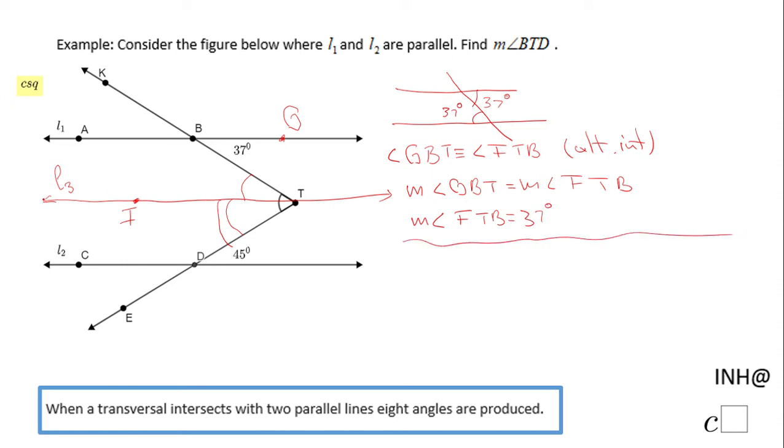Similarly, we're gonna look to L sub 3 and L sub 2, and we have this transversal, now transversal ET. You notice this angle here is 45 degrees. This angle here also will be 45 degrees for the same reason, like in the previous stage here, alternate interior angles.